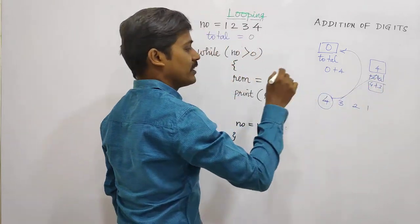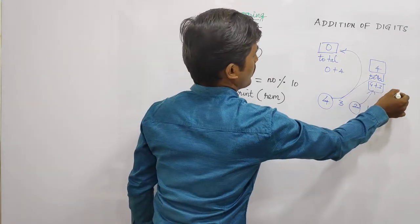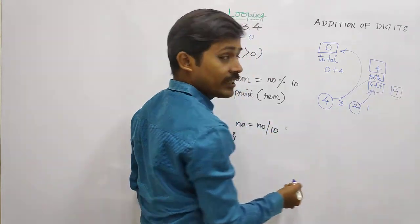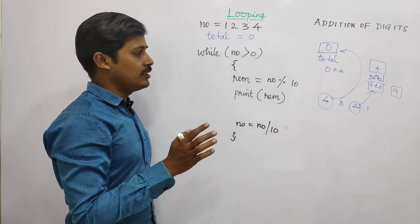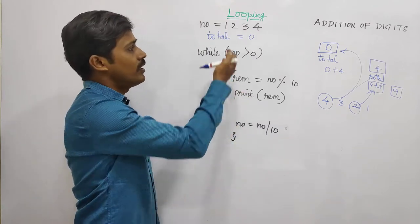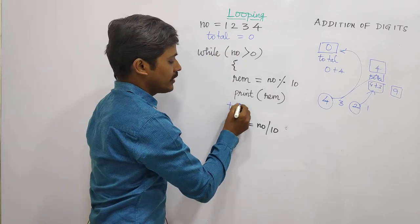Then, 7. Add this. Add this. Then, total is 9. Add this. Then, 10. This way we can do it. That's easy. This way we can do it.